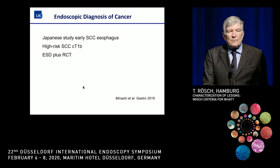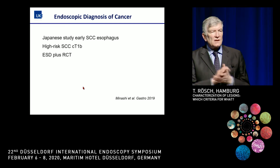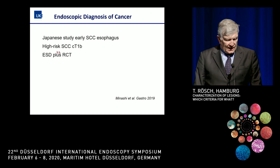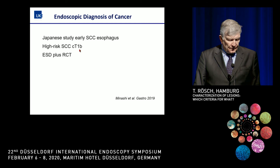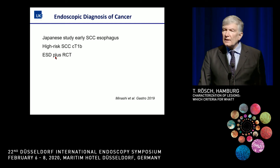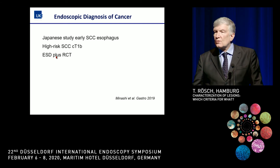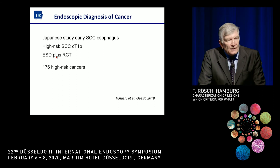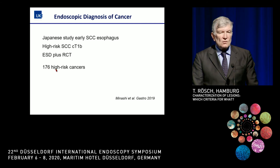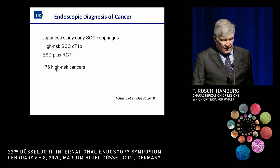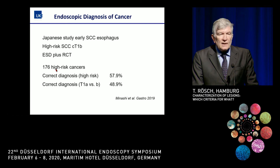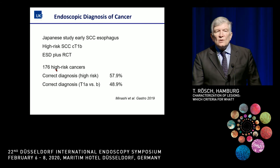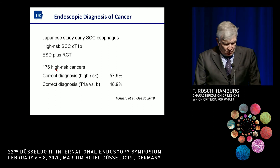Even in Japan — the land of imaging high priests — it doesn't seem to be easy. In a very interesting study on esophageal squamous cell cancer (high risk, not treatable by endoscopy alone), with groups treated by ESD plus radiochemotherapy, there were 176 high-risk cancers recognized by super experts on the basis of imaging — yet the correct diagnosis was achieved in only half the cases. So the range is 30% to 50%; it does not seem to work in real life when you're not biased and very focused.